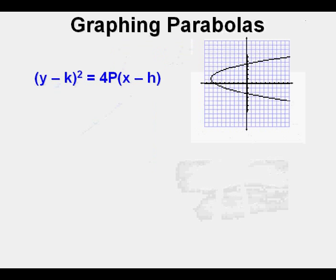There are two versions of the standard form of the equation of a parabola. There is (y - k)² equals 4P times the quantity (x - h). This results in a parabola that opens to the left or to the right.